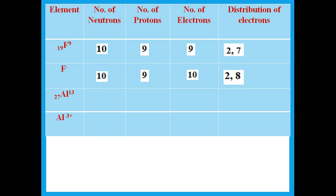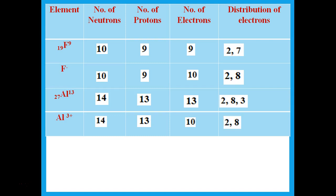For aluminium, small number 13 and big number 27: neutrons = 27 − 13 = 14; protons = 13; electrons = 13 (no charge). Distribution: 2, 8, 3. For Al³⁺, the 3 plus means it has lost 3 electrons. The atomic number and mass number are unchanged, so neutrons and protons are still the same. Only the electrons change — now 10 electrons, distributed 2, 8.